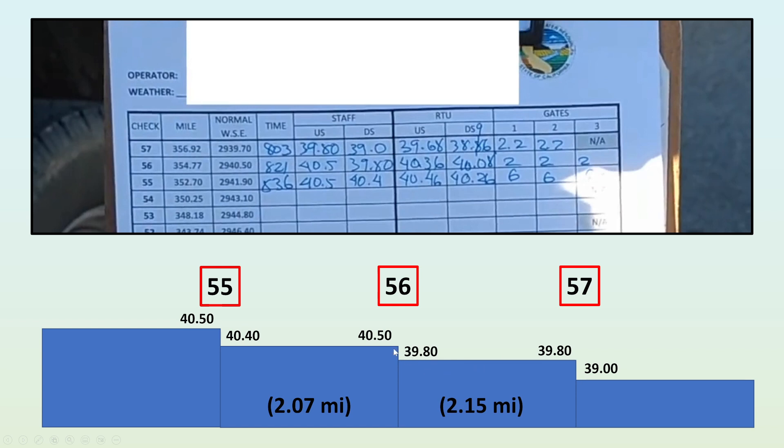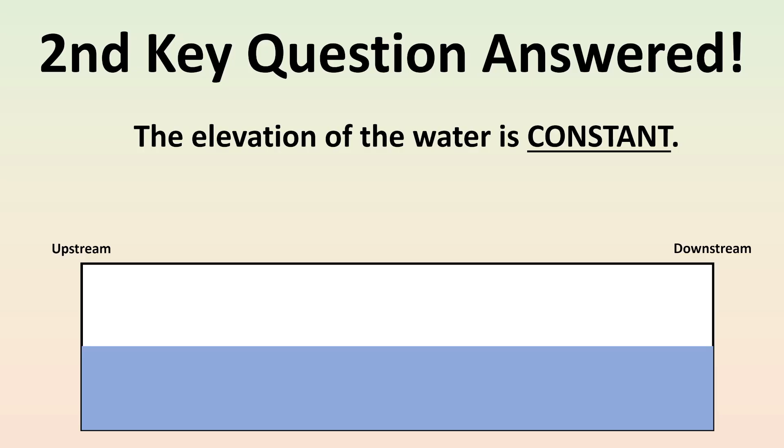Now I should mention here for completeness that Jay Toland's measurements were made between checkpoints 49 and 50, which the employee hasn't measured yet. But nevertheless, the data that we do have, we can say that the water is not sloping downwards in elevation. So that's the second key question answered. The elevation of the water is constant. These are lakes, not rivers.